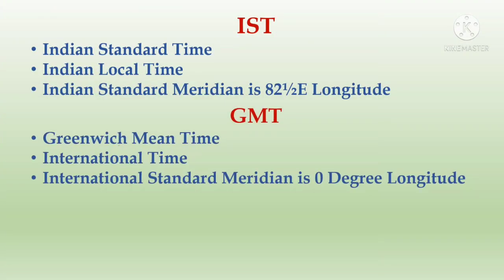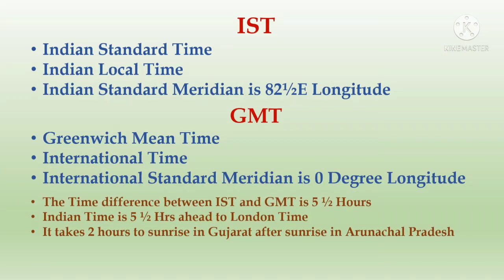IST, Indian Standard Time, is also called Indian Local Time. The Indian Standard Meridian is 82.5 degrees east longitude. GMT means Greenwich Mean Time, also called international time; its standard meridian is 0 degrees longitude. The time difference between IST and GMT is 5 hours and 30 minutes, which is why Indian time is 5 hours 30 minutes ahead of London time. It takes two hours for sunrise in Gujarat after sunrise in Arunachal Pradesh.